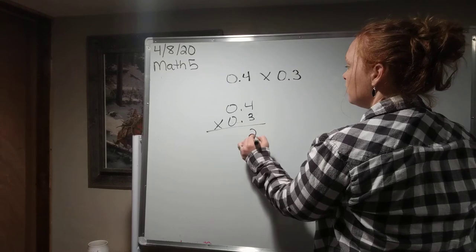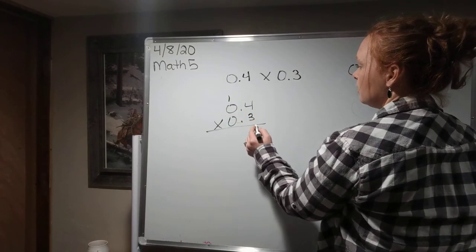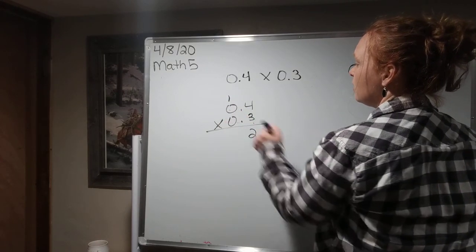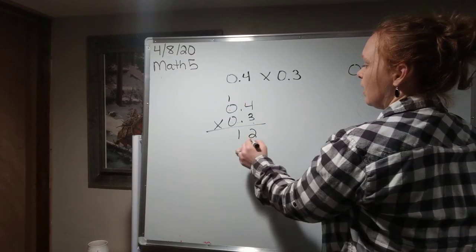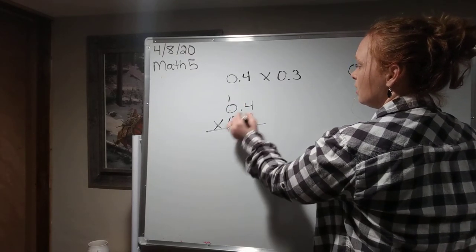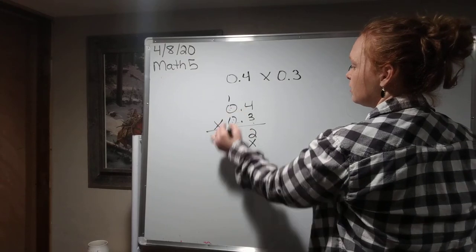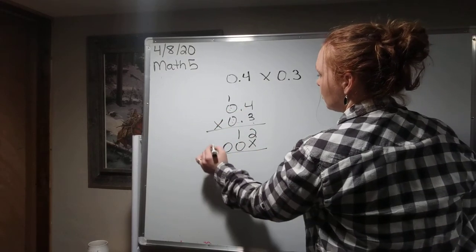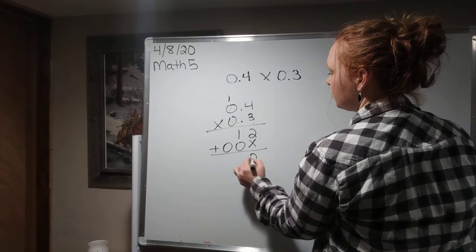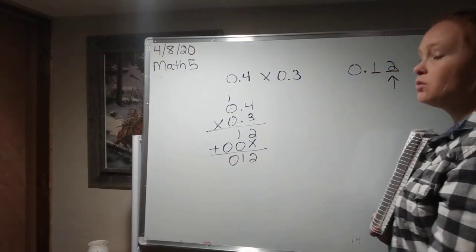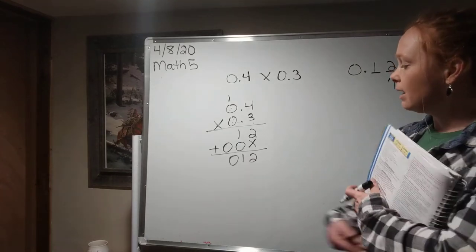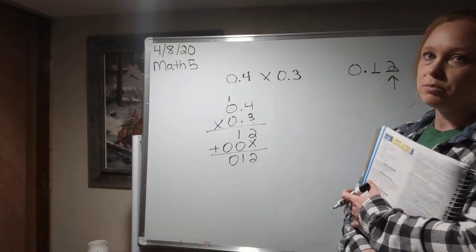3 times 4 is 12. Carry the 1. 3 times 0 is 0 plus 1. Now, I'll mark out the 1's place. 0. 0 times 0 is 0. Now, I'm going to add them. Okay? Now, this is where, after we get an answer, we start dealing with the decimal point.